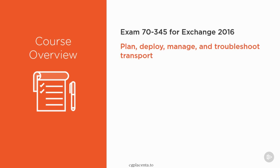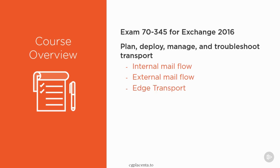Transport means mail flow. So we're going to look at internal mail flow, which is email between mailbox users within your organization. We'll also look at external mail flow, which is email to and from people outside of your organization. For external mail flow, some organizations deploy the Exchange Edge Transport server role, which is a dedicated server role designed to sit in perimeter networks for external email. We'll take a look at that server role as well in this course.